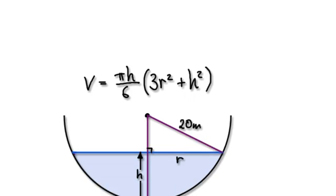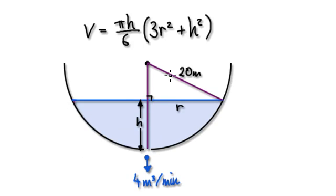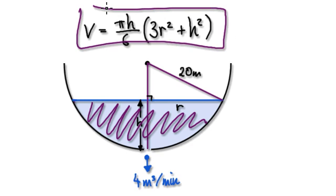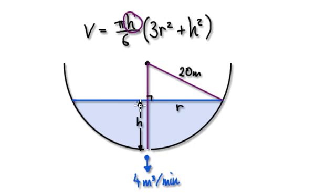Let's give you some more practice. Say you've got a hemispherical water reservoir here. The volume is given by this formula here, where h is the height, and r is the distance from the center to the edge, which is 20 meters.